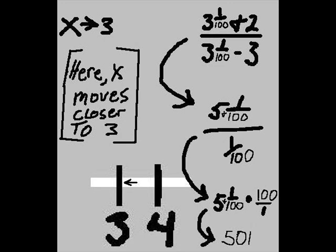x now becomes 3 and a hundredth. Substituting in, we get 3 and a hundredth plus 2 in the numerator divided by 3 and a hundredth minus 3 in the denominator, which becomes 5 and a hundredth in the numerator and a hundredth in the denominator. Finally, 5 and a hundredth divided by a hundredth becomes 5 and a hundredth times its inverse, 100 over 1. 100 over 1 times 5 is 500, 100 times 1 one-hundredth becomes 1. Answer is 501.